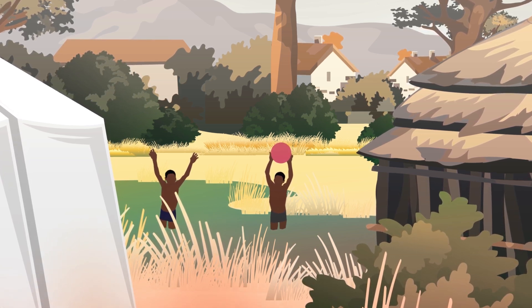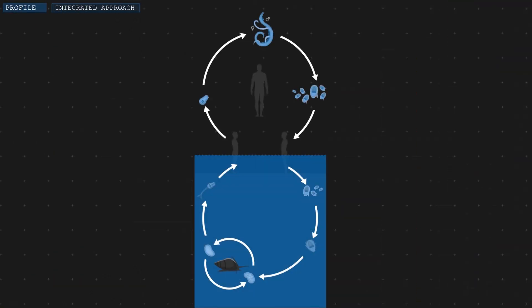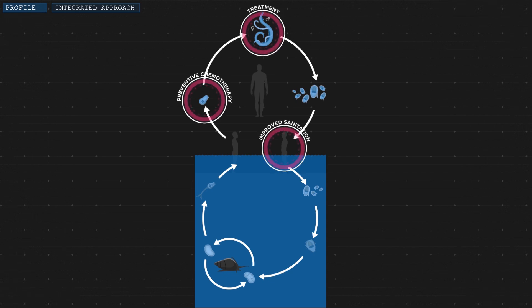Instead, it needs an integrated approach — a multi-component approach that targets the entire life cycle of the parasite. For instance: preventive chemotherapy using Praziquantel, improved detection and treatment of sick people, improvement of sanitary facilities for safe and acceptable disposal of human excreta, provision of safe drinking water, reduction of contact with contaminated water, health education and snail control. But such an approach is of course very difficult to realize and requires a long-term, well-structured control program.